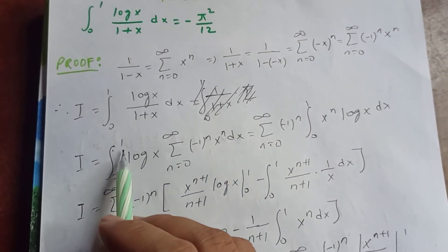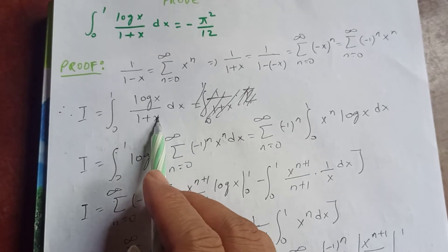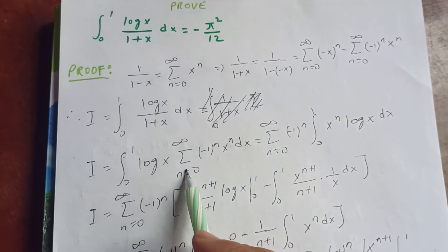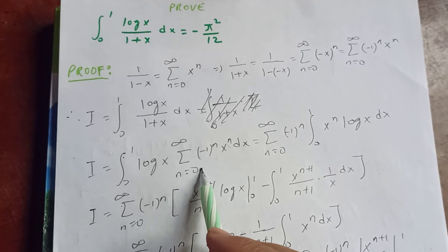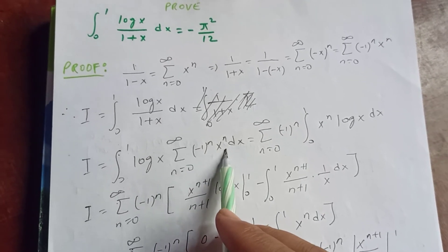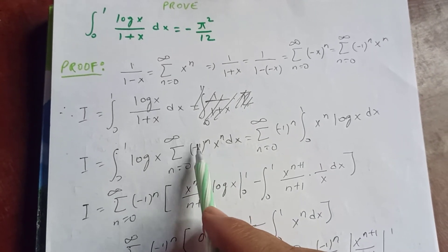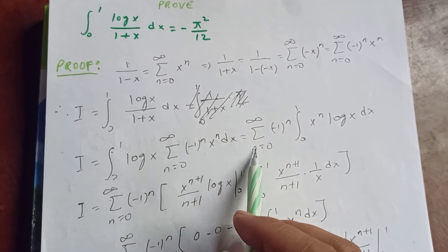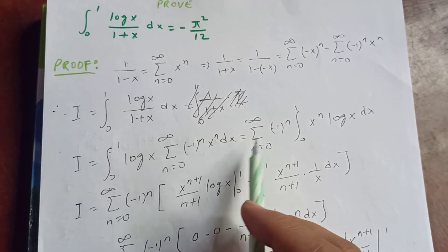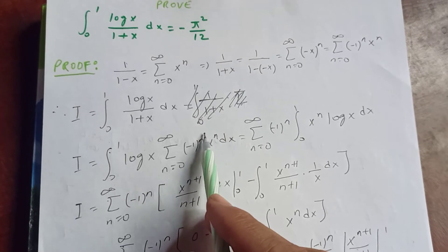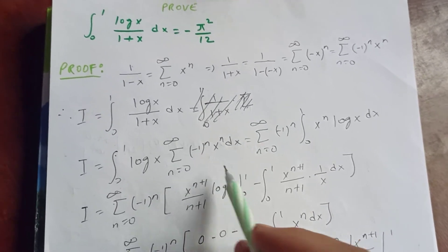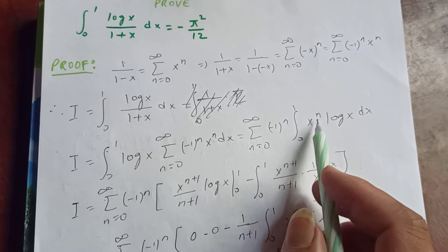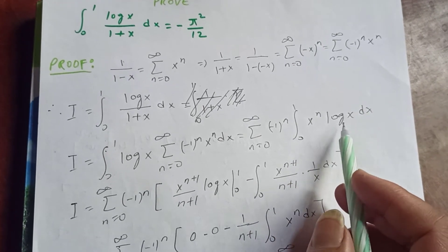Now coming back to our integral, I equals the integral from 0 to 1 of log(x) times the sum from n equal to 0 to infinity of (−1)^n x^n dx. Interchanging the summation and integral sign, this becomes the sum from n equal to 0 to infinity of (−1)^n times the integral from 0 to 1 of x^n log(x) dx.